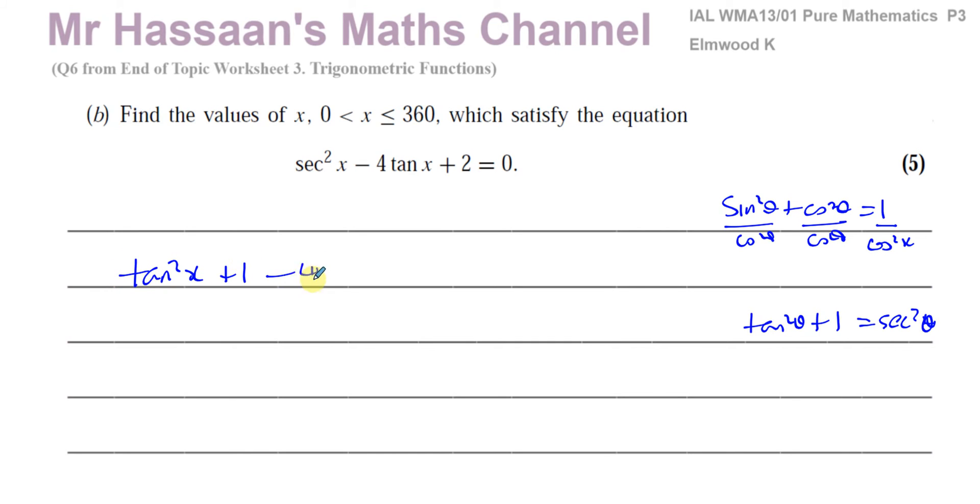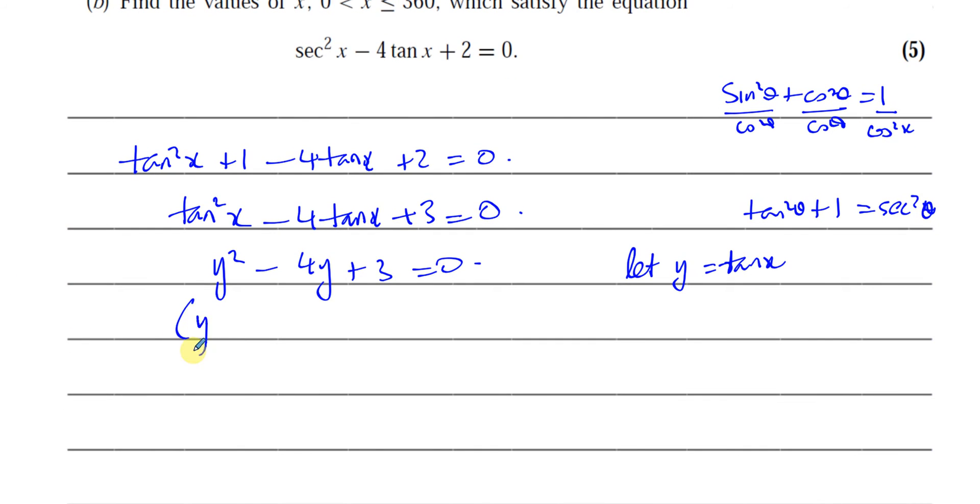6 times (tan²x plus 1) minus 4tan x plus 2 equals 0. Now I can basically rearrange this to make it as tan²x minus 4tan x plus 3 equals 0. And this I can treat as a quadratic equation because I've got something squared minus 4 times that same thing plus 3. So to make life easy, a lot of students like to do this. For example, let y equals tan x. So this will be y² minus 4y plus 3 equals 0. I think this factorizes quite easily into (y minus 3)(y minus 1). That's right, equals 0. So we know that y equals 3 and y equals 1 are solutions to this.